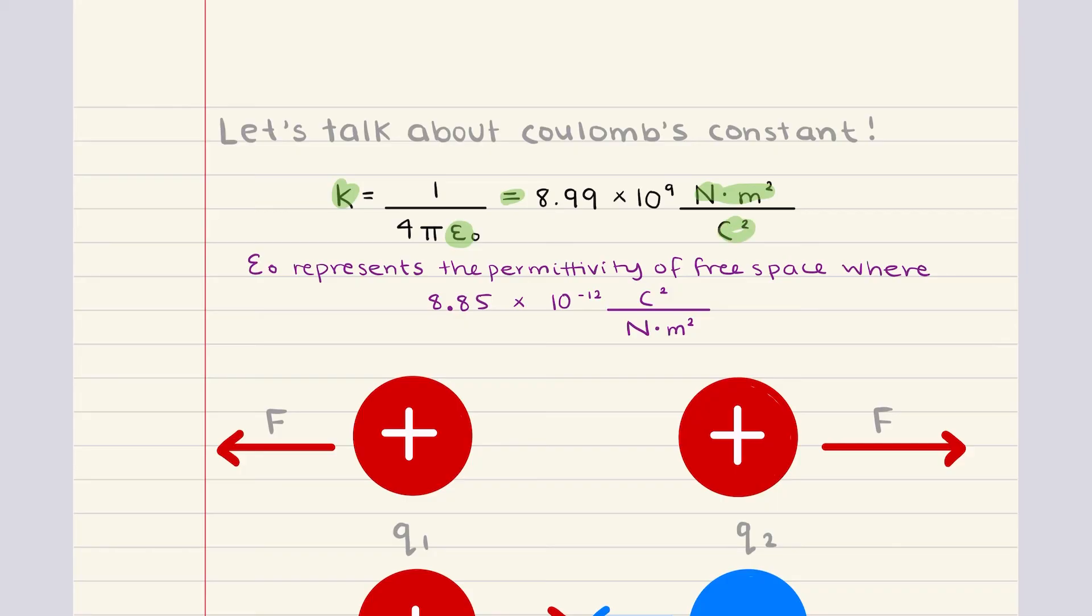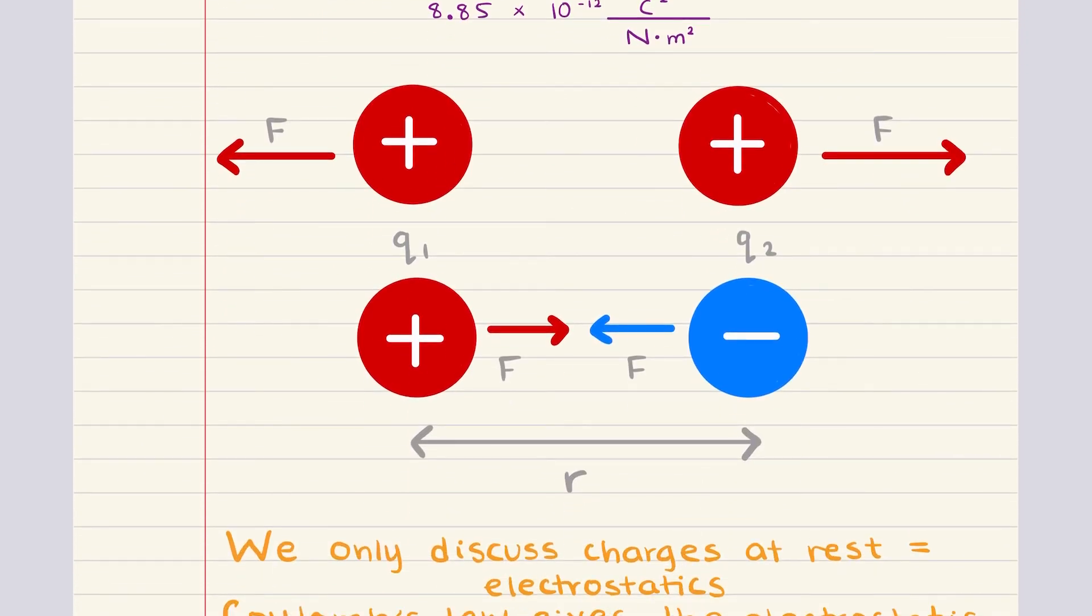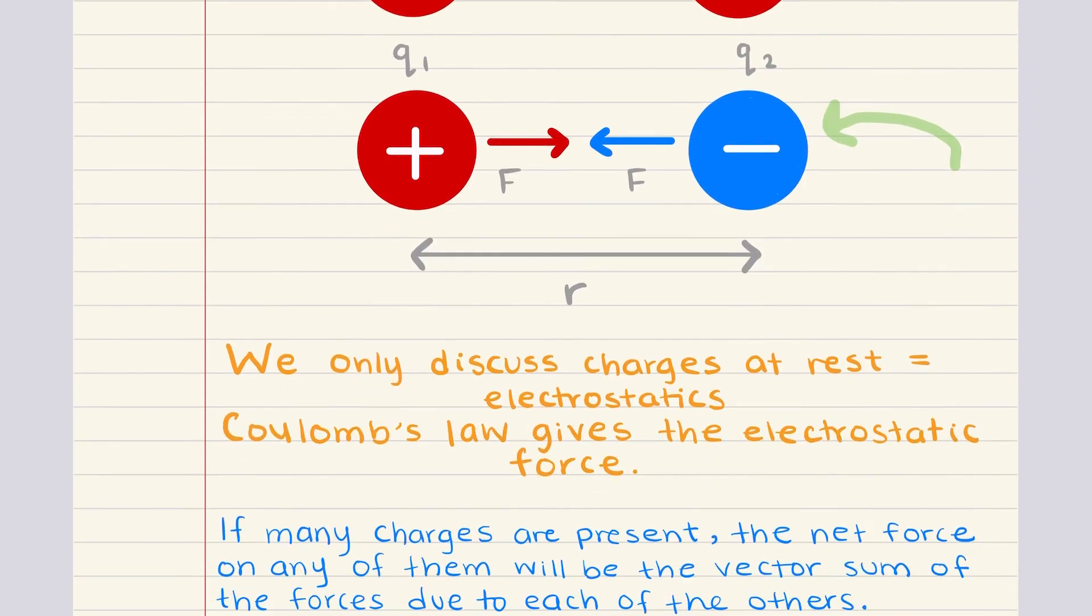Now Coulomb's law, it applies only to charges at rest, which is why it's crucial in electrostatics. The force it describes can be either attractive or repulsive, depending on the signs of the charges involved. If the charges are opposite, like we see here, then the force will be attractive and it will pull them towards each other. If the charges are the same, like we see here, then the force will be repulsive, pushing them apart.